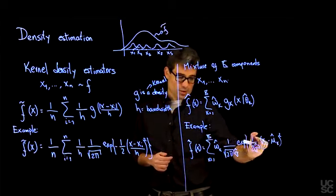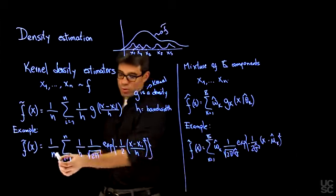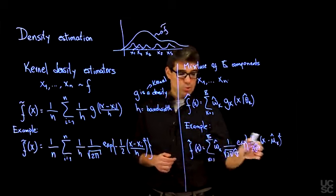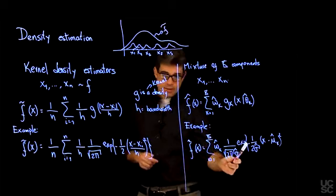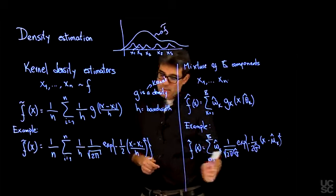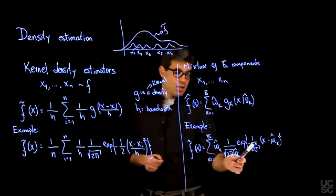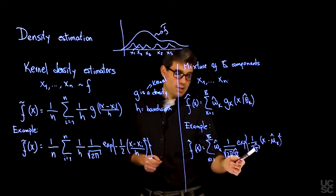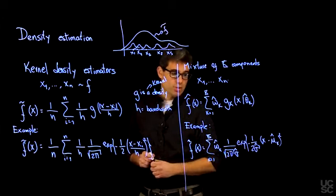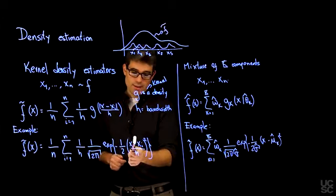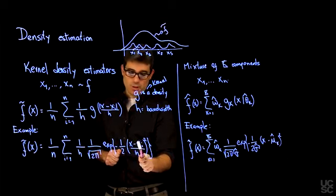There is a very clear parallel. Then, when you start stretching capital K, when you start to increase the number of components in the mixture, what you are doing is basically making the weights more uniform, because you tend to put one observation in each component of the mixture. The other thing to highlight here is that sigma essentially plays the same role as H. The bandwidth in the kernel density estimator is essentially the same thing as the standard deviation in my location mixture of Gaussians.